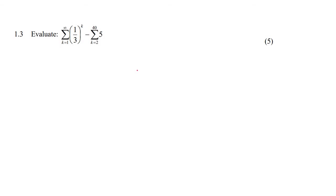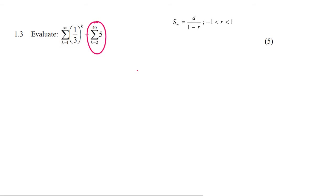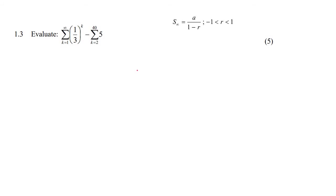In this question we can definitely see that we're probably going to have to use the sum to infinity, and then this part here will be pretty easy. So let's start with this first part. What we need to do is we need to know A, which is term 1. To find term 1, you just start with whatever number is at the bottom here, so that's going to be a third to the power of 1, which is just a third.